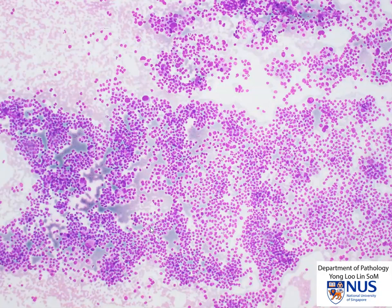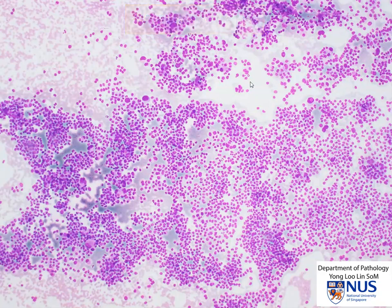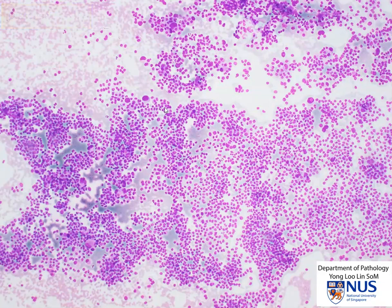Hello, this is an FNA of a thyroid nodule in a 48-year-old lady, and we can see that it is a highly cellular smear. The cells appear to be quite discohesive, or relatively loosely aggregated.